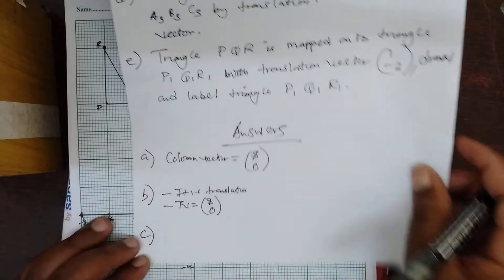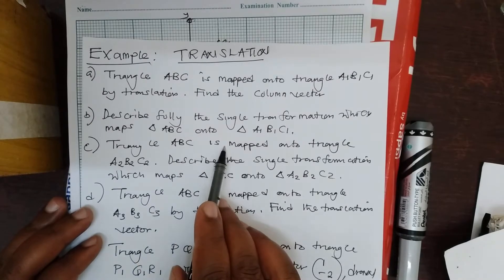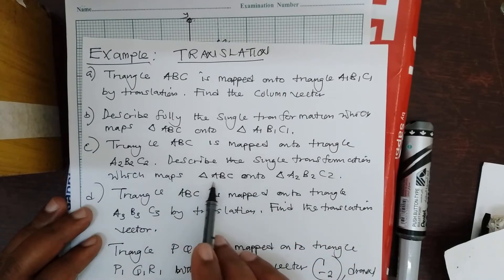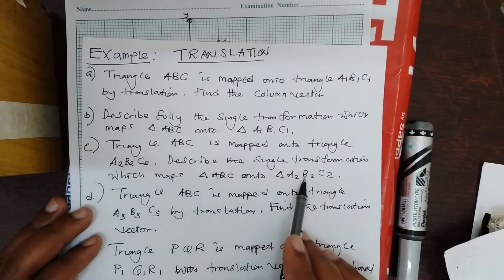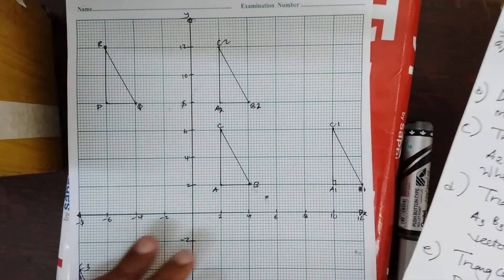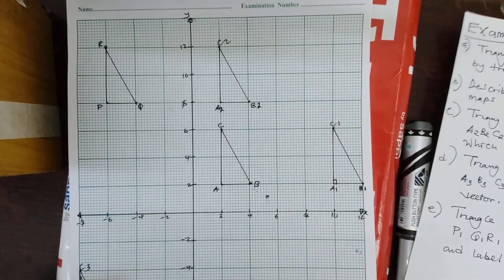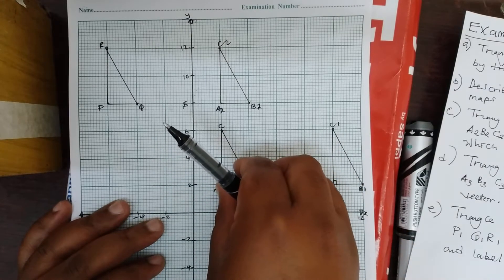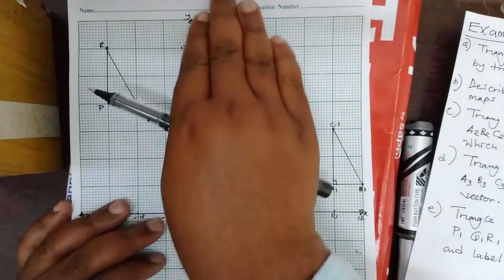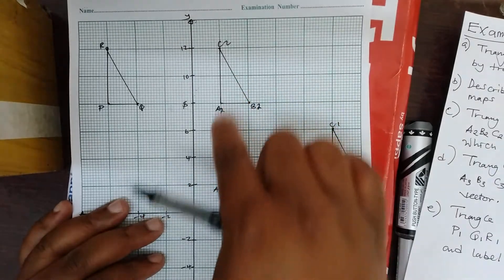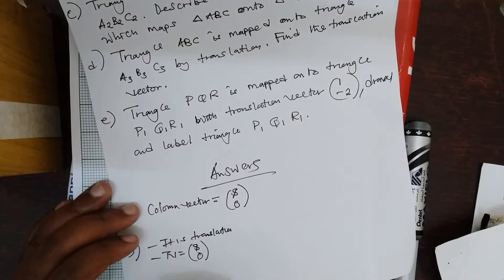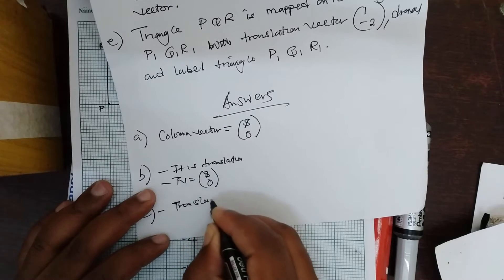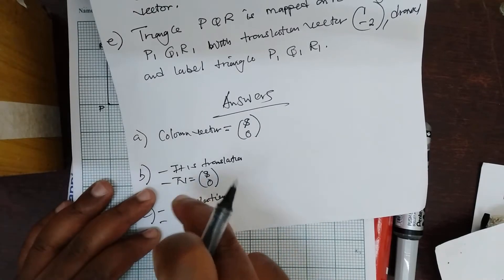So we are going to go to C. Triangle ABC is mapped onto triangle A2, B2, and C2. Describe the single transformation which maps triangle ABC onto A2, B2, and C2. We have this triangle mapped onto that one. The object has moved from here onto this one in a straight line. The dimensions are the same, meaning this is a translation. So you are going to say it is a translation.